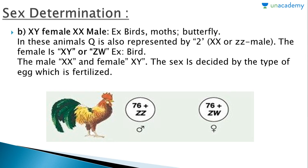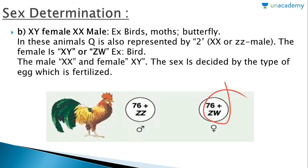Next we have the ZZ-ZW type, where the female is XY (or ZW) and the male is XX (or ZZ). Examples include birds, moths, and butterflies. In these animals, ZZ or XX represents the male and ZW or XY represents the female — the opposite of the previous case.